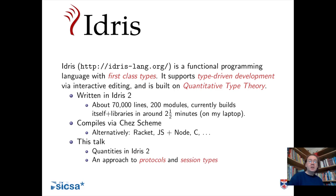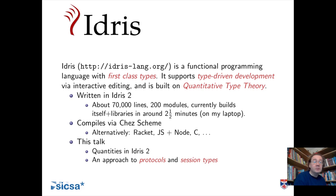Idris is a purely functional programming language, kind of in the tradition of Haskell. So if you've seen Haskell then hopefully the syntax I'm going to show you will be familiar. The distinctive thing about Idris is that it has first-class types — meaning types are just like any other thing like integers or strings. You can assign them to variables, pass them to functions, return them from functions, and do all the things you can do with any other variable.